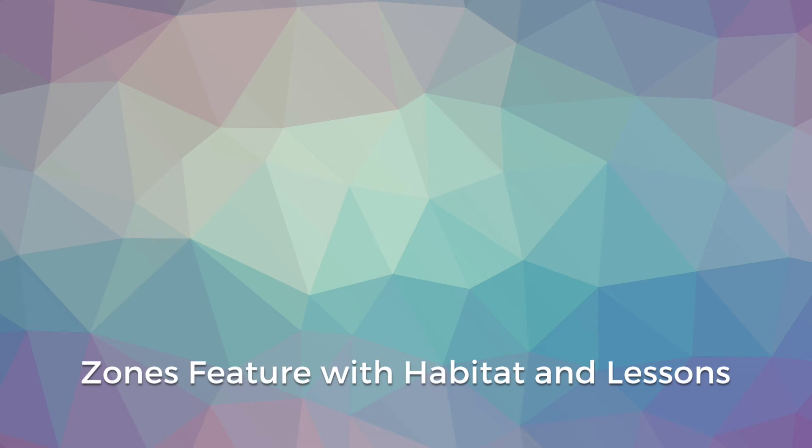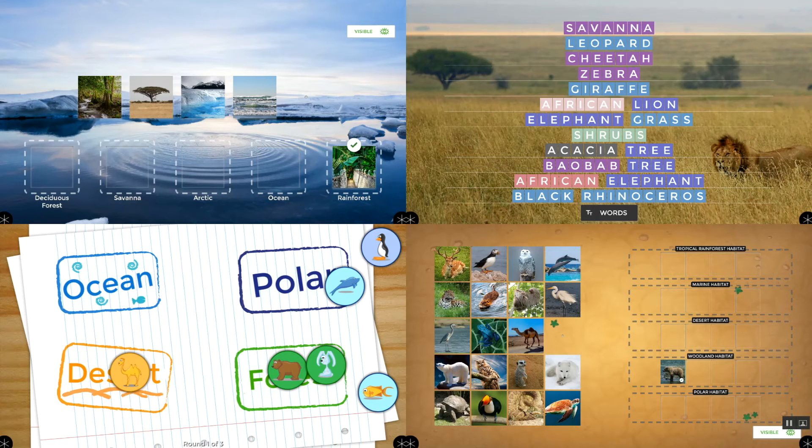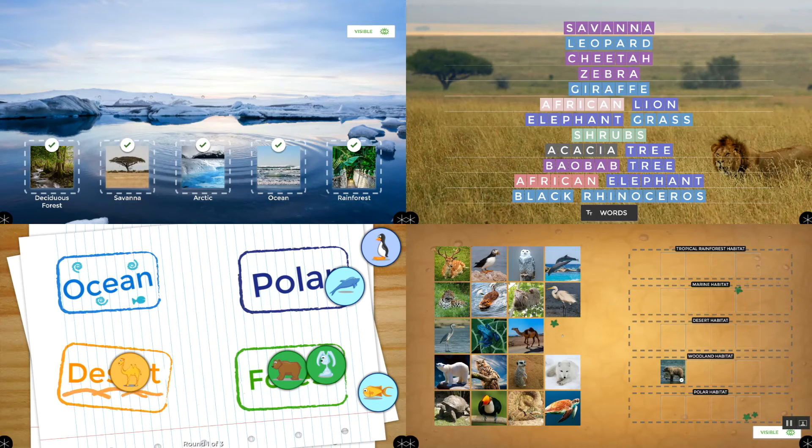Next, we'll look at how the Habitats app can be used with previously created lessons from the Multiteach Lessons community using the Zones, Rotate, and Swap Zones feature, similar to what was shown with the Bones and Organ Science apps. In this example, the Habitats app is in the lower left side.